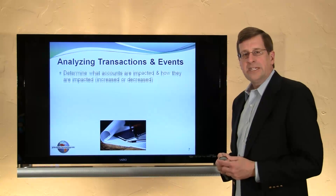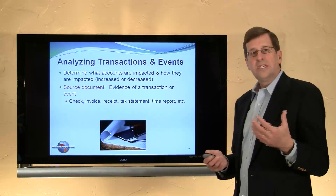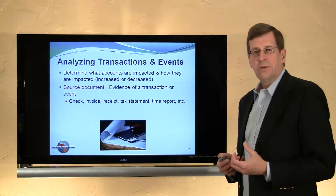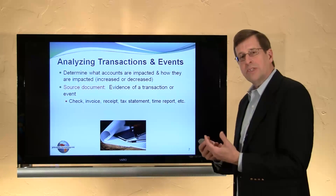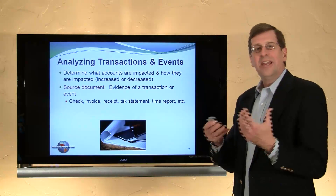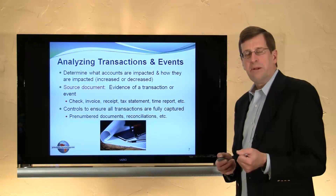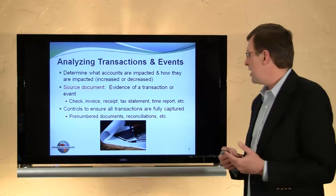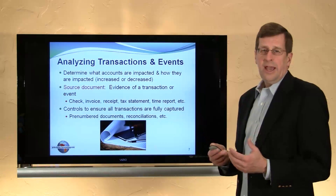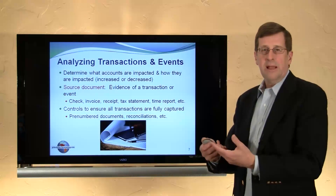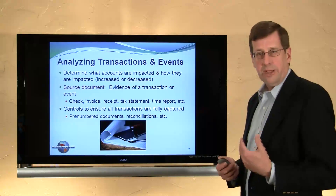Now let's think about analyzing transactions and events. We need to consider the source documents — such as checks, invoices, receipts — and think about what accounts are being impacted by a transaction, what is their effect on those accounts, whether those accounts are being increased or decreased, and then translate that into a debit-credit consequence. We also need control systems in place, such as pre-numbered documents and periodic reconciliations, to be sure that all transactions and events are captured correctly.